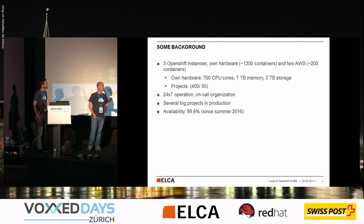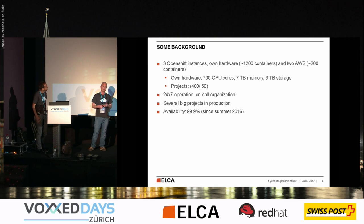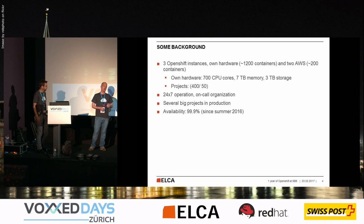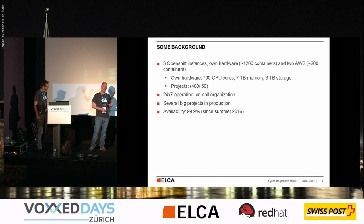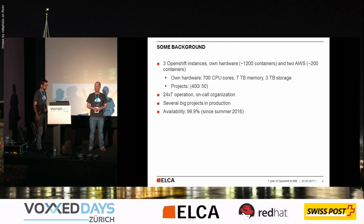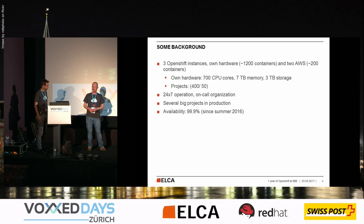We provide 24/7 operation for all of our productive clusters, with a team handling the on-call work. We also have several big applications from SBB running completely on an OpenShift cluster. One example you may know is the SBB mobile app — for checking trains or buying tickets, every request from the mobile app goes to the backend on OpenShift running on AWS. If you buy a ticket at a train station, your fare calculation is served by backends hosted on OpenShift. Since summer 2016 we've had a general availability of about 99.9 percent — not too bad.